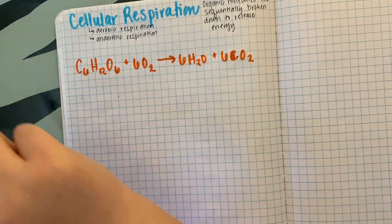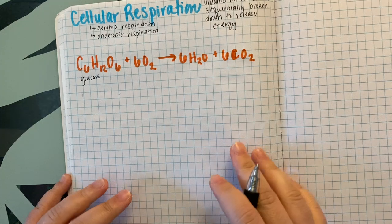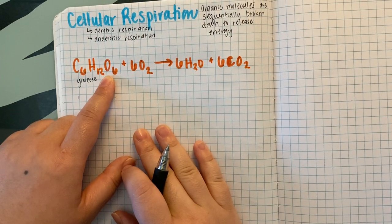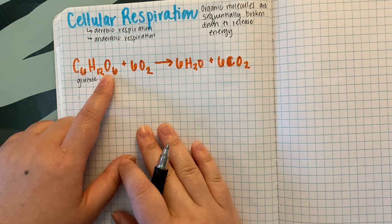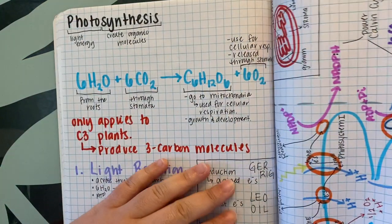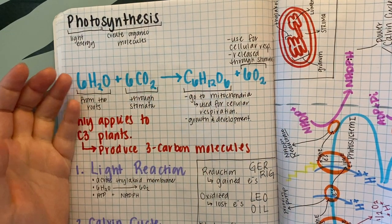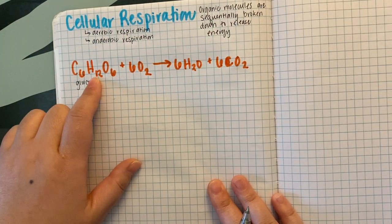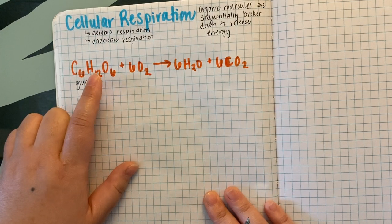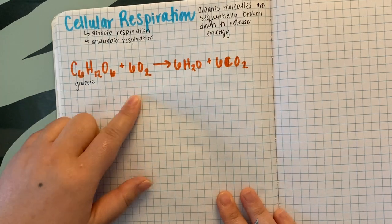For heterotrophs, the glucose came from plants or other organisms we ate. If you eat beef, you're getting glucose and macromolecules from that beef, but the cow got its macromolecules from plants, and plants made them through photosynthesis. So all the energy stored in the macromolecules we consume originally came from sunlight — we're now transferring that chemical energy from glucose to ATP.